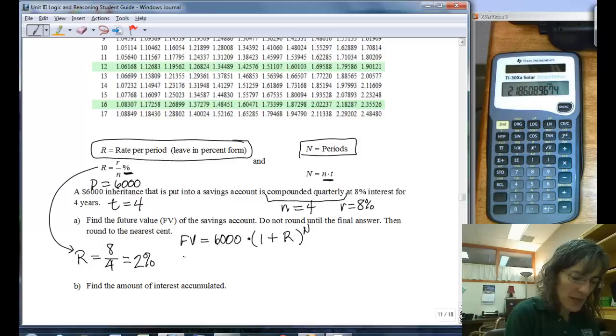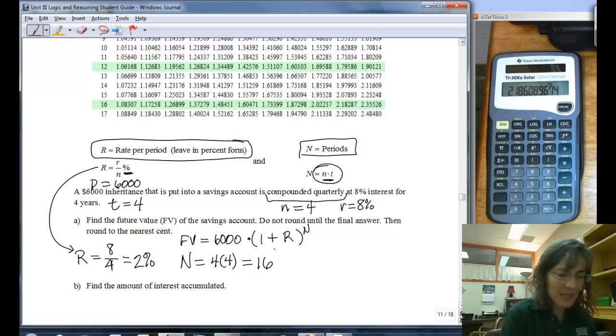And then the big N is, that's right here, it's the n times t, so my little n, that's going to be 4. And my t is also 4, so I end up with 16 for the N.